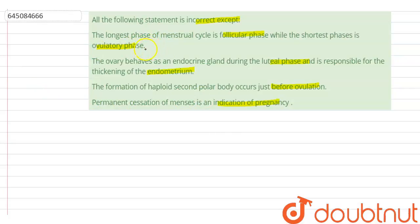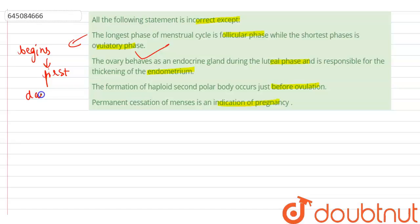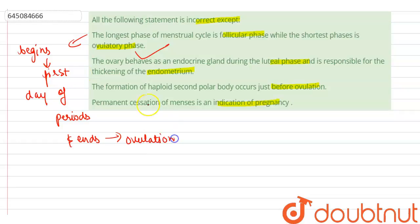The first statement — the longest phase of the menstrual cycle is the follicular phase and the shortest phase is the ovulatory phase — is the correct option and the correct statement. The follicular phase is the longest and also the most variable phase. It begins on the first day of menses and ends at the time of ovulation. The ovulatory phase is the shortest, lasting just 24 hours.